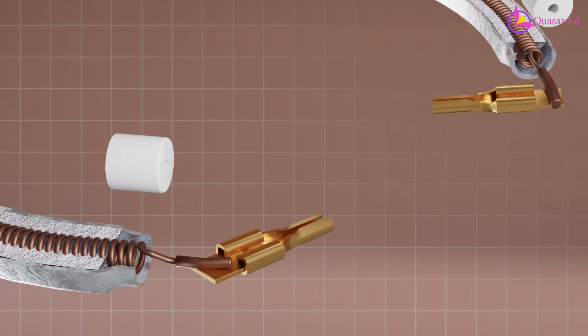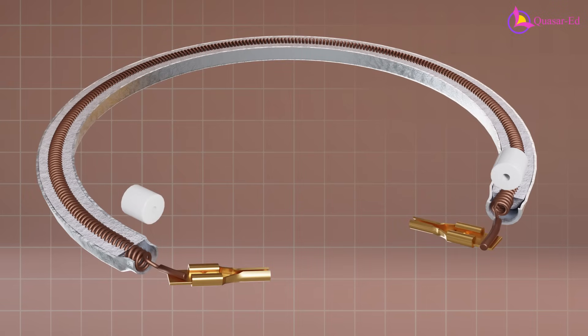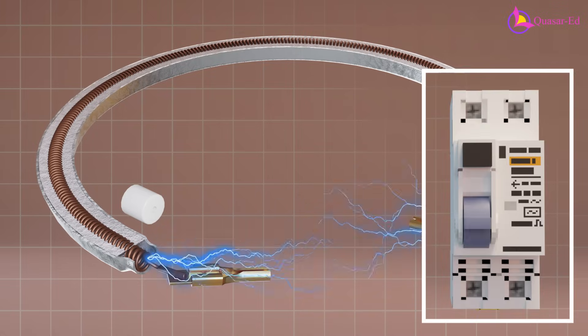If the electricity bypassed the high resistance nichrome wire and found a low resistance path like the metal, it would cause a short circuit, drawing excessive current and triggering the circuit breaker.